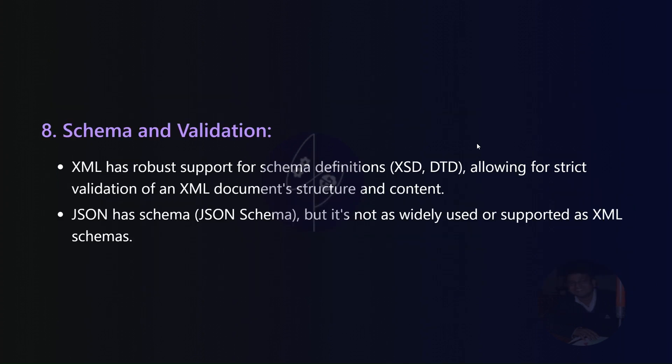Schema and validation. XML boasts robust support for schema definitions — XSD and DTD — enabling strict validation of document structure and content. JSON incorporates a schema (JSON Schema), but its usage and support are not as widespread as XML schemas.